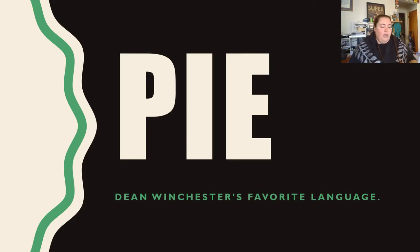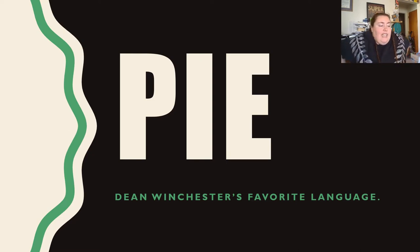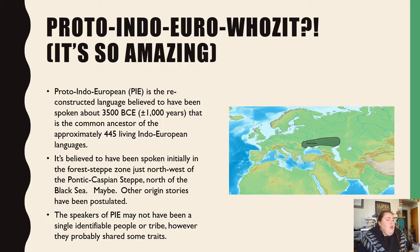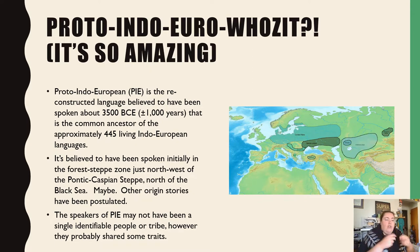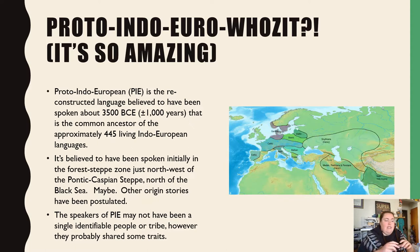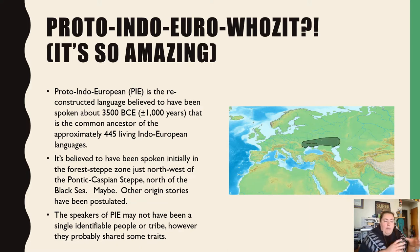Alright, boring class stuff over with. Let's continue into what is one of my favorites — PIE. PIE is Dean Winchester's favorite language. So what do we know about Proto-Indo-European? PIE is the reconstructed language believed to have been spoken about 3,500 years ago, give or take about a thousand years — the common ancestor to approximately 445 living Indo-European languages. If you look at the map, you can see an expanding set of boundaries — that's one of the main theories about where PIE comes from, what we call the Urheimat.